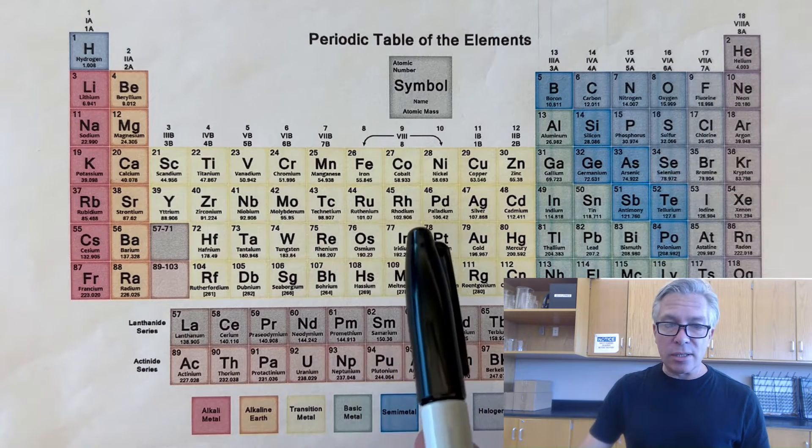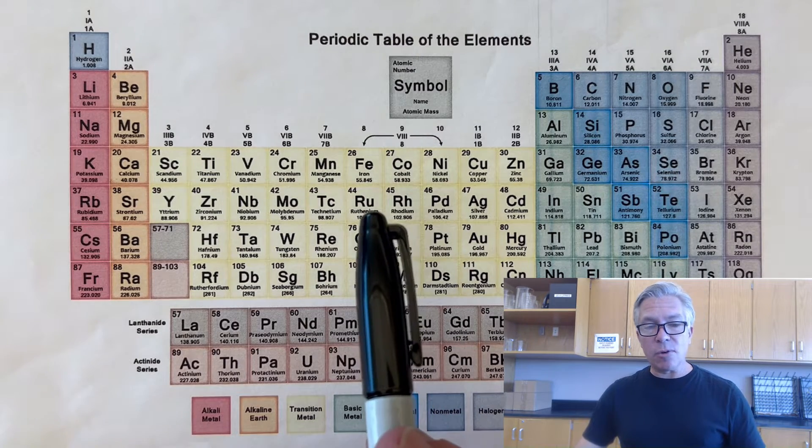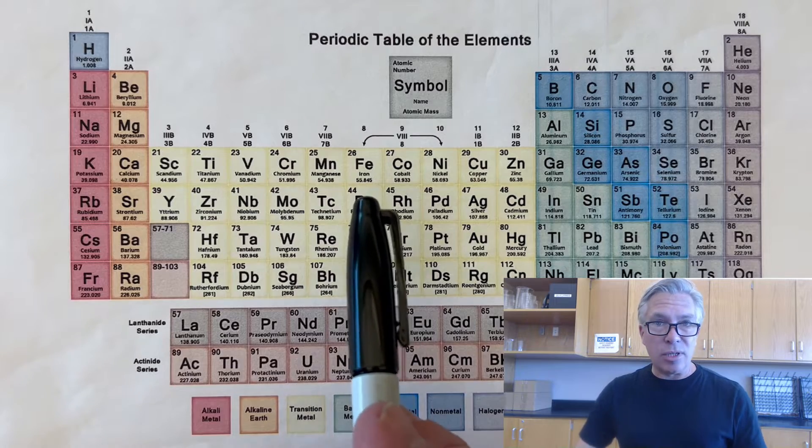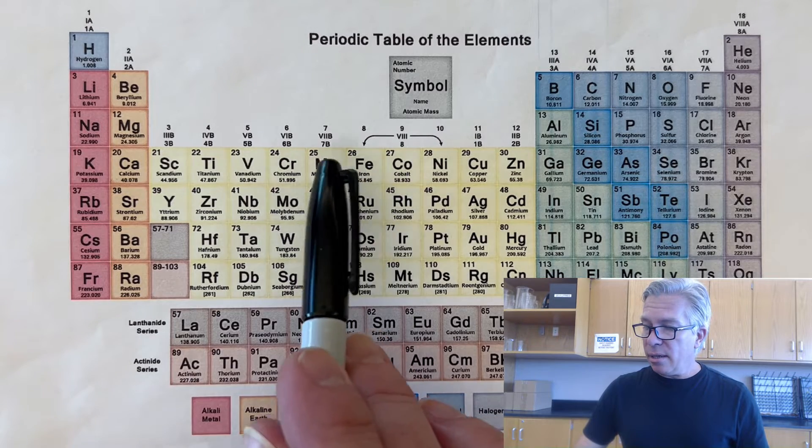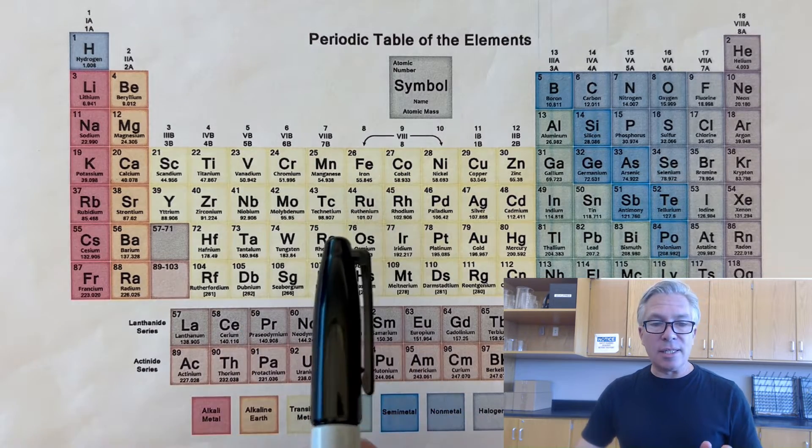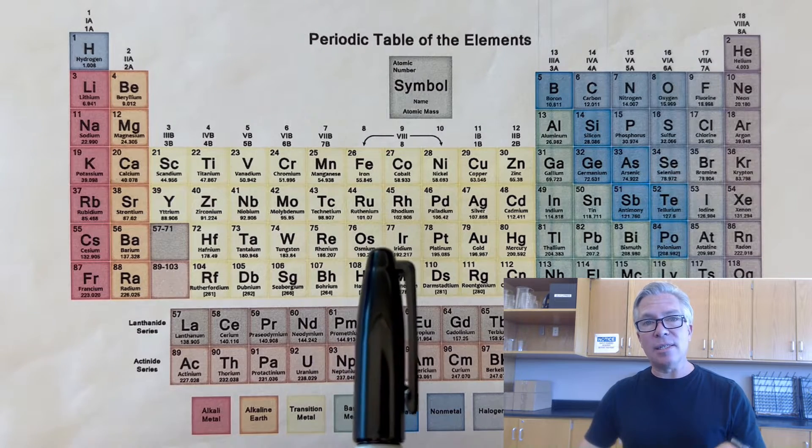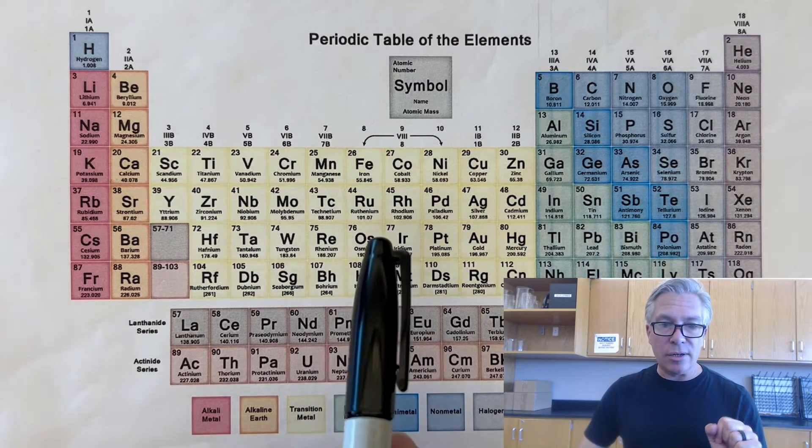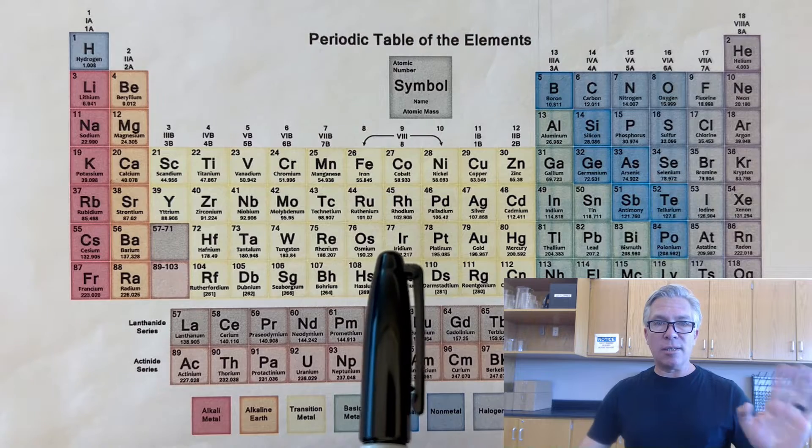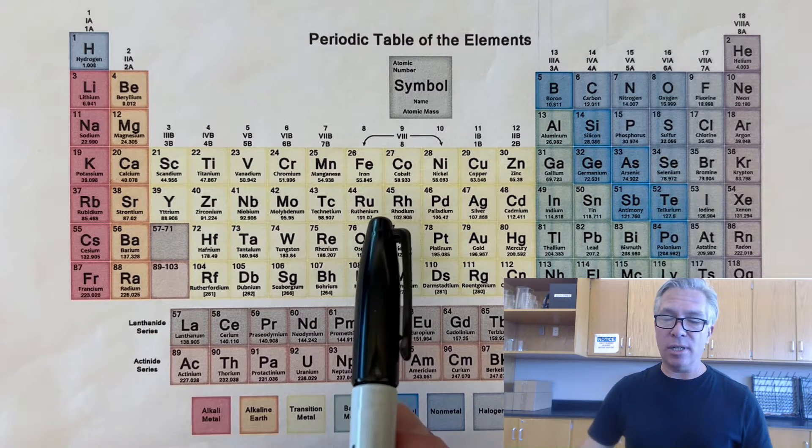Okay, and what causes those different versions? Well, first, it's not the protons. So in any one of the elements, it's the number of protons that defines the element. So going back to iron, anything that has 26 protons is iron. That's what defines what it is.